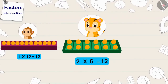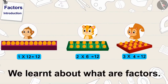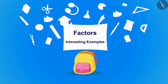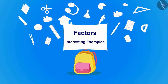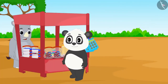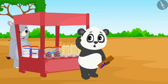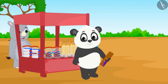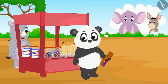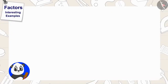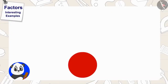Hello, children. In the last video, we learned about what are factors. In this video, we will learn more about factors through some interesting examples. Goldu bought a box of twenty-four pencils from the market. Goldu thought that he would distribute these pencils equally among his friends. At first, Goldu thought that he would give twelve pencils to two of his friends.